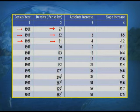After 1921, there was a gradual increase in the density of population, as you can see on the screen. In the latest census of 2011, the population density rose to 382 persons per square kilometer.